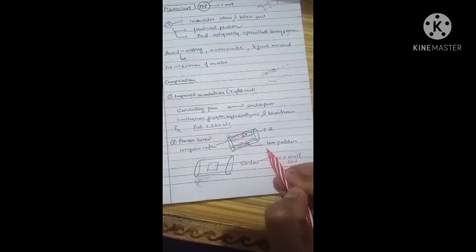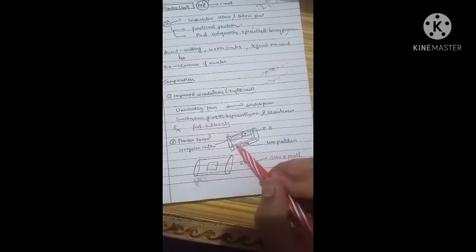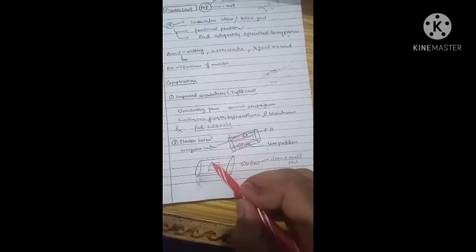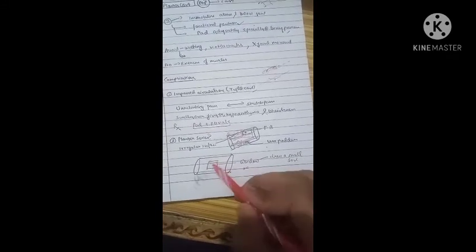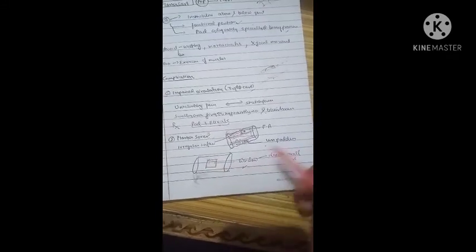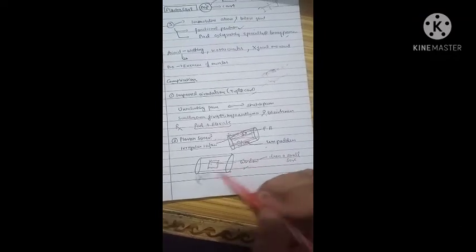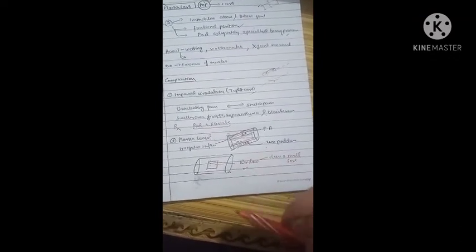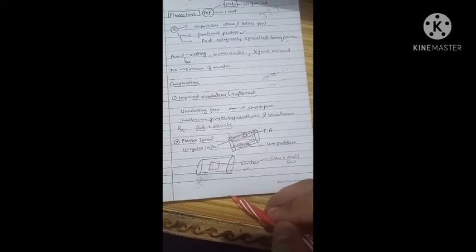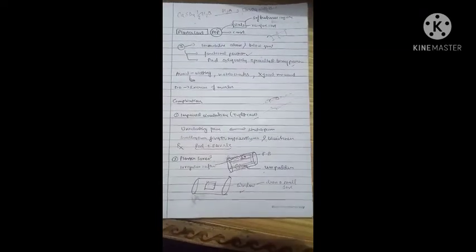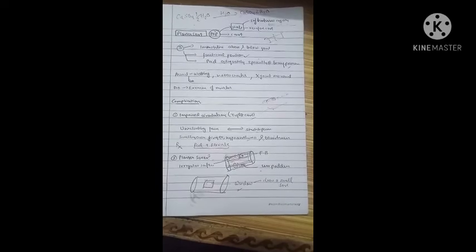If there is a small plaster sore, it can be treated by forming a window and then dressing the sore. But if it is a large sore, we need to remove the whole plaster cast and then treat it. These were some important points you needed to know about plaster cast. Thanks for watching.